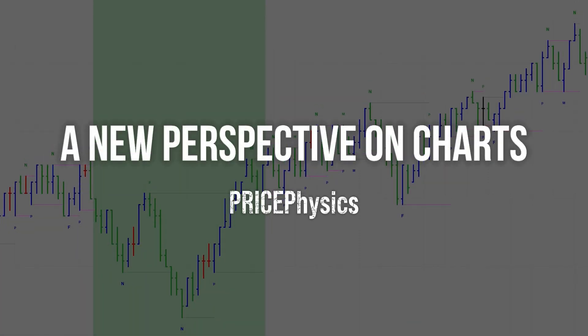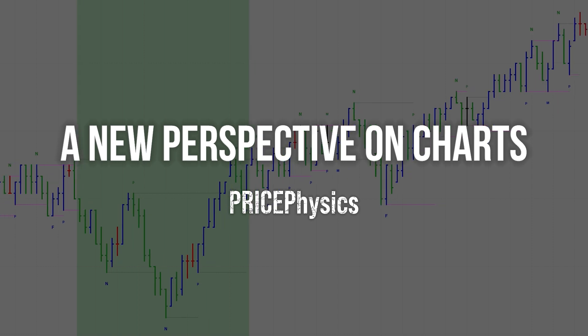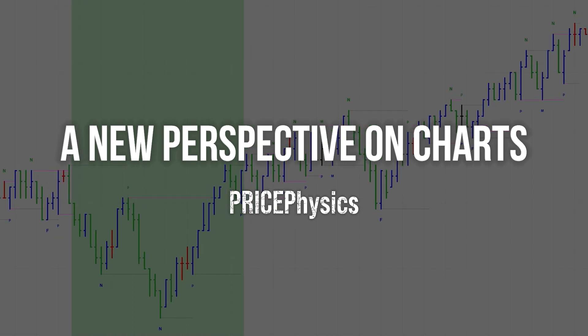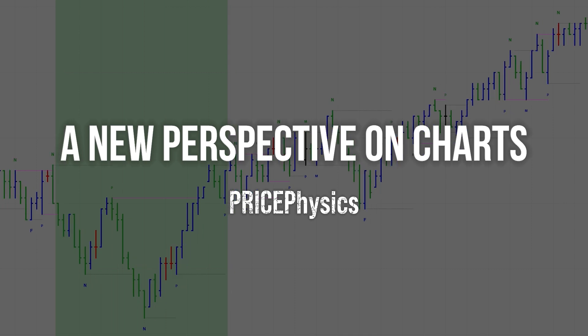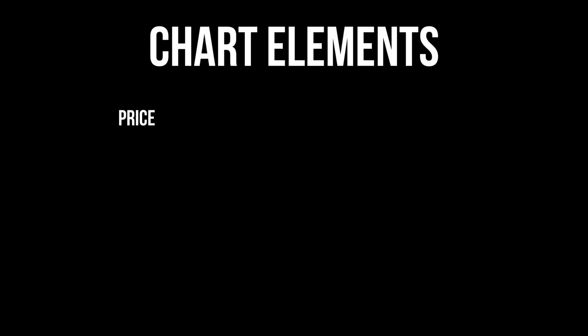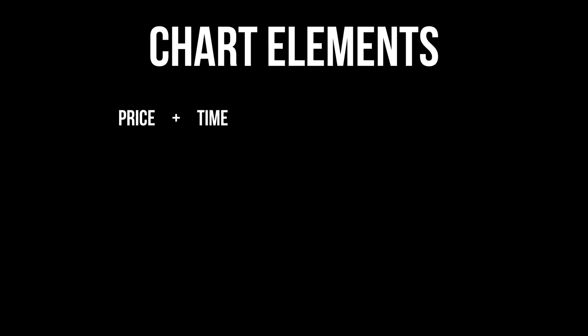In this video you will discover an alternative to traditional time-based charts. That alternative is constant volume charts, and understanding them will have a dramatic impact on your perception of price movement. Typically, traders rely on charts that have three elements: the first is price, the second is time — the trader selects a time frame, which could be 60 seconds, 30 minutes, daily, whatever the choice — and the last element is indicators.